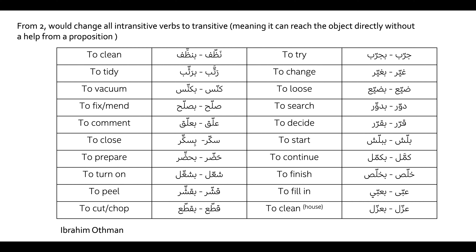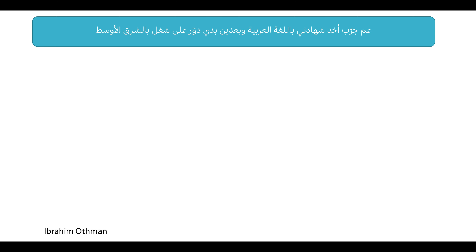The present tense would be: ana ratab, enta bitratab, enti bitratabi, entu bitratabu, nihna binratab, huwe biratab, hiya bitratab, henne biratabu. As a task, give it a try and conjugate one of these verbs. Don't forget to leave them in the comment section below and I will definitely get back to you and correct them if anything needs to be fixed.